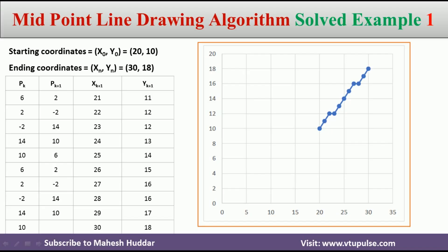(20, 10) is the first point. Second point is (21, 11). Next is (22, 12), then (23, 12), then (24, 13), (25, 14), and continuing until the last point (30, 18). This is the procedure to draw the line using the midpoint line drawing algorithm given the start and end points. I have also solved numerical examples on the DDA line drawing algorithm and Bresenham's line drawing algorithm — links for those videos are given in the description below. Do follow those videos to understand how to draw lines using different line drawing algorithms in computer graphics.